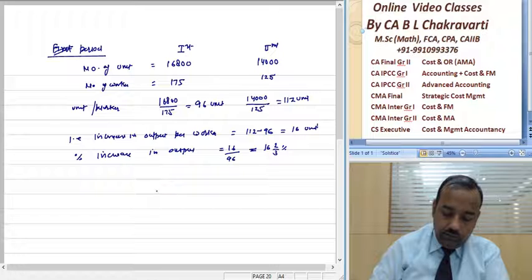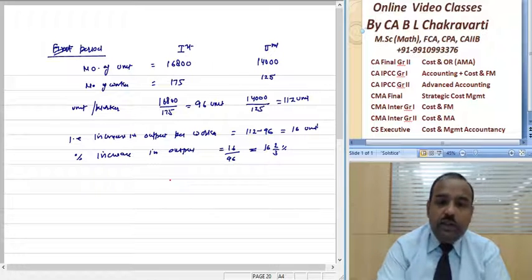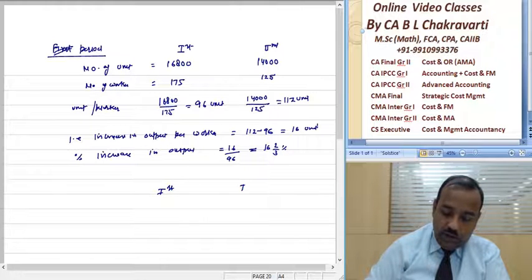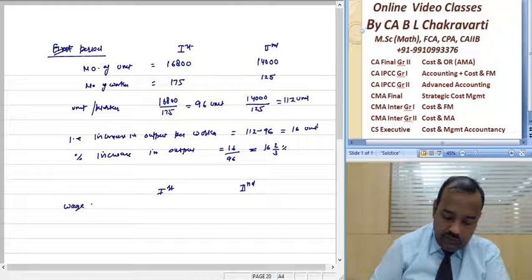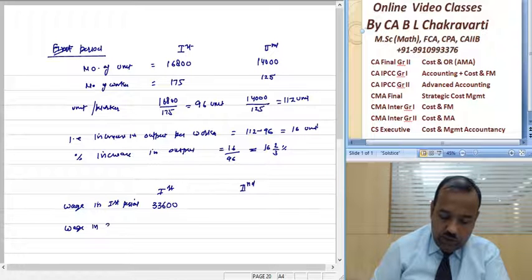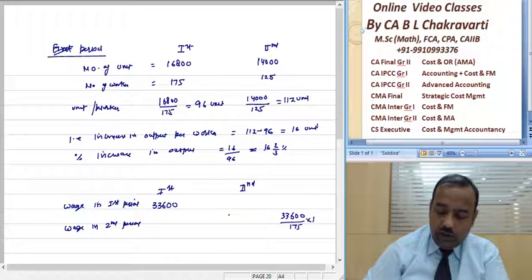Now, let's see wages. This is the first period. This is the second period. Wages in the first period: 33,600, which used to be for 175 workers. There are 125 workers. How much are our wages? 24,000.